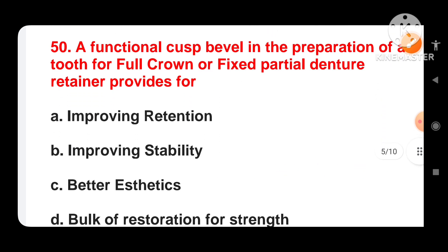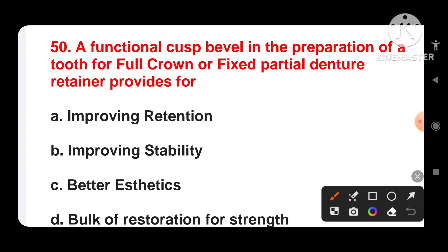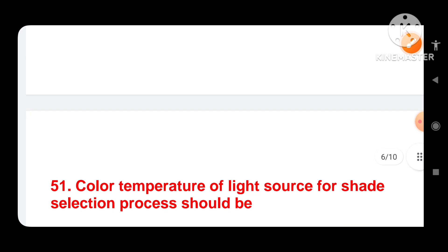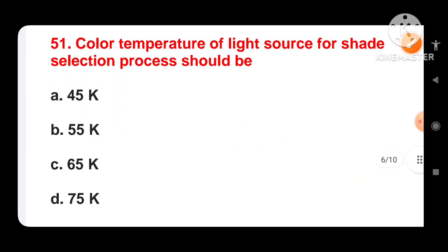Next question: a functional cusp bevel in the preparation of a tooth for full crown or fixed partial denture retainer provides form for — options are improving retention, improving stability, better aesthetics, or bulk of restoration for strength. The correct answer is that a functional cusp bevel provides for improving retention.